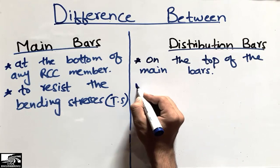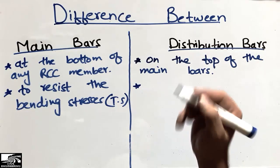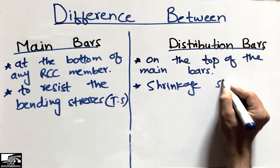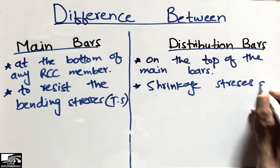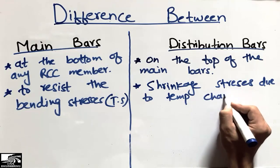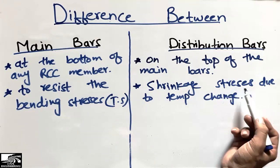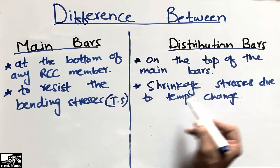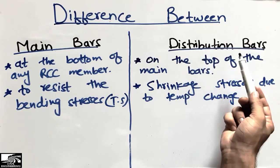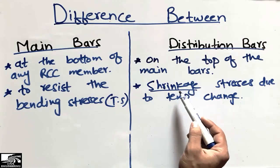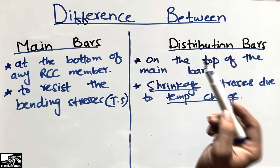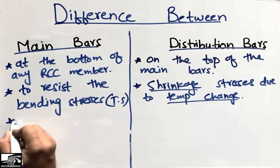While the distribution bars are those which are used to resist the shrinkage stresses due to temperature change. Some shrinkage stresses are formed in the member, so we provide these bars. They are called distribution bars, and sometimes they are also known as shrinkage reinforcement, because they are used to resist the shrinkage stresses which occur mainly due to temperature change.